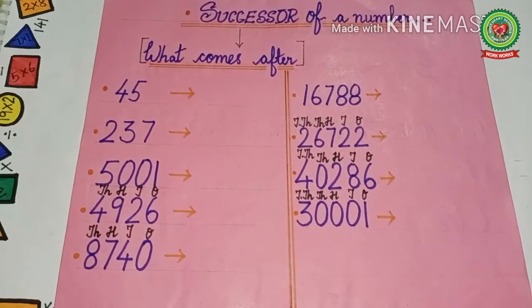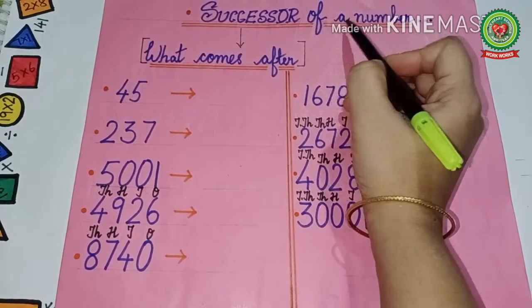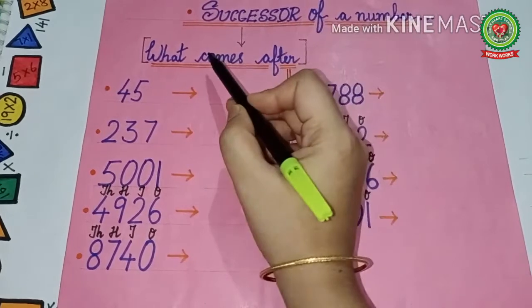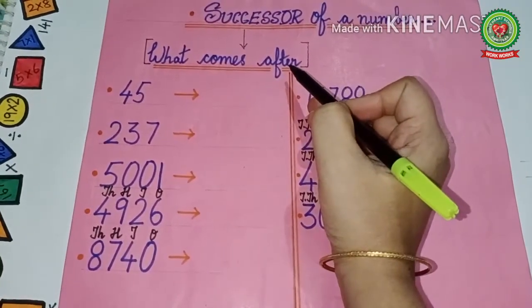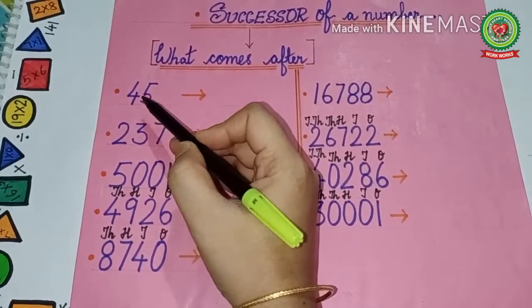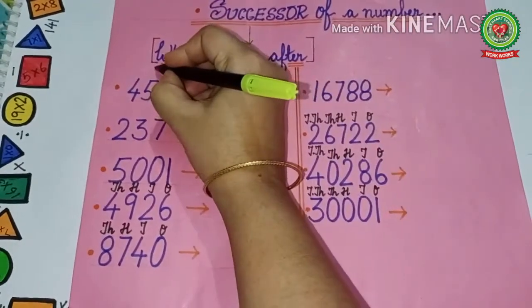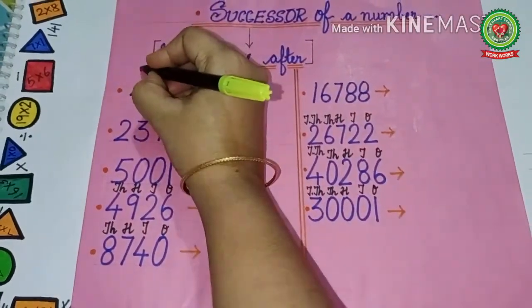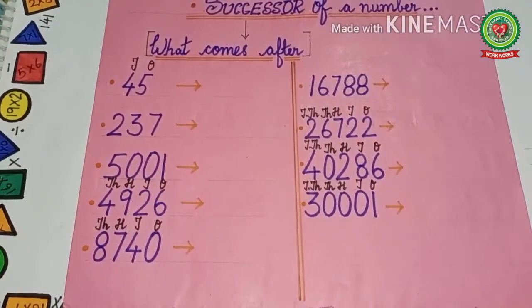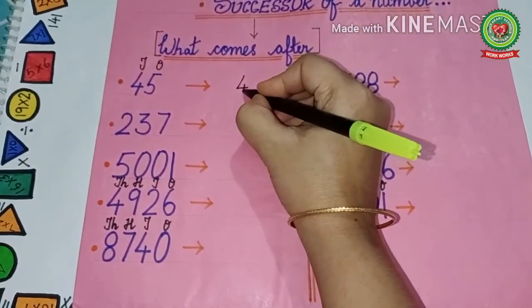Let us take some examples. Successor of a number means what comes after. Read the first number with me: 45. We have to tell what comes after 45. First of all, we will write the place value table — ones and tens. What comes after 45? That is 46. So we write 46 here.